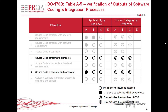An open circle means the objective should be satisfied, and a filled circle means it should be satisfied with independence. Independence can mean someone else within the software development team — the person who wrote the code should not be the person who tests it — or it can be someone outside the development team, even outside the company. The further away from the original developer, the more you can trust they've done an objective analysis.